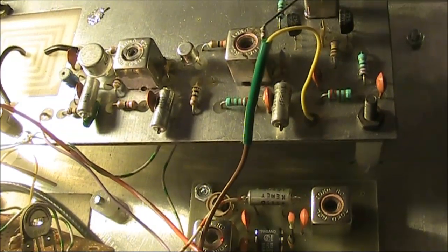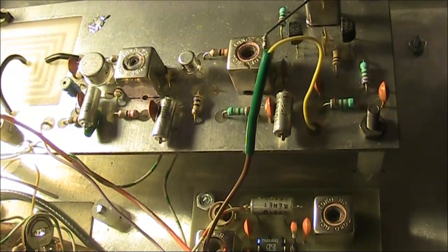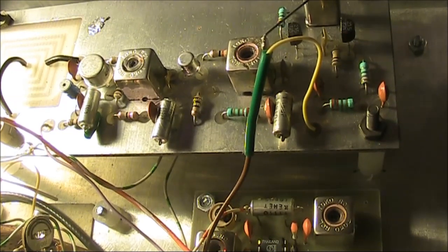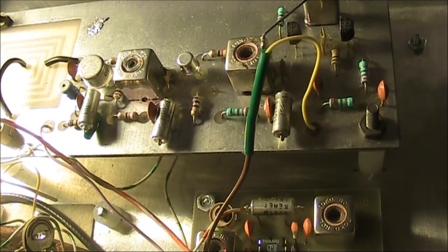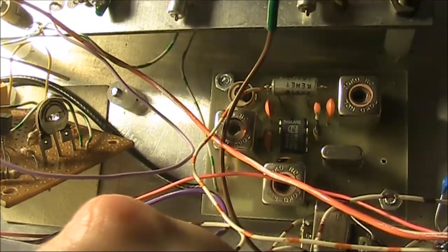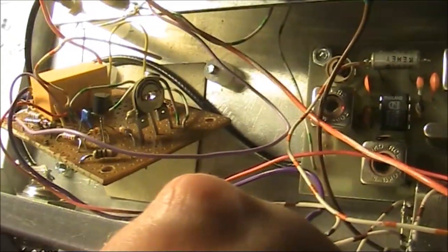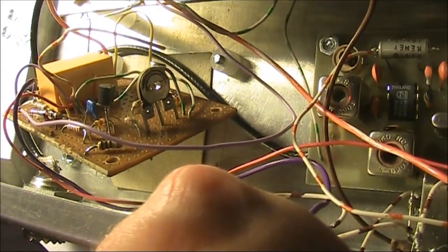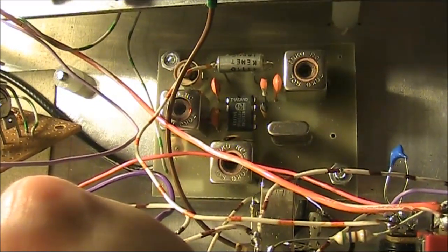The only use for this transmitter would be to use it as a beacon. And bearing in mind that in Melbourne we don't have any active 6 meter beacons. And if we do use it as a beacon, that means that we no longer require either the control board, or at least not in this form, or the receive converter.